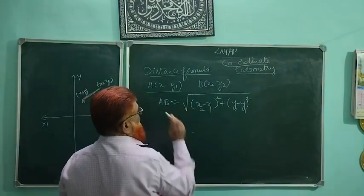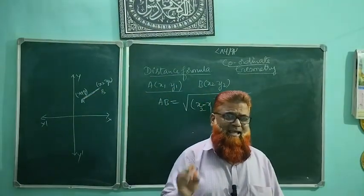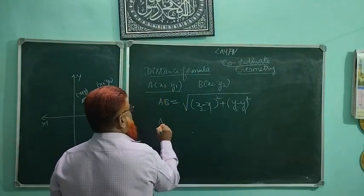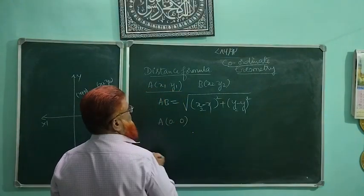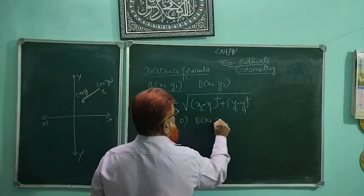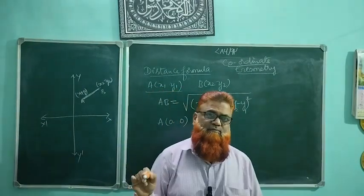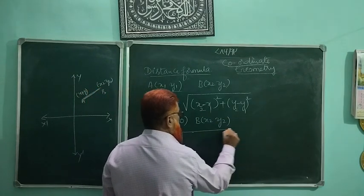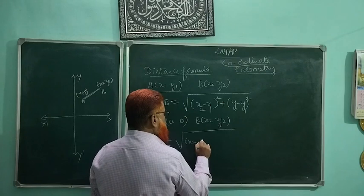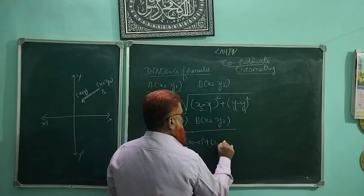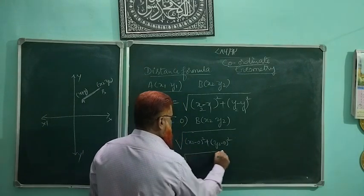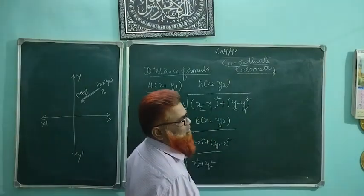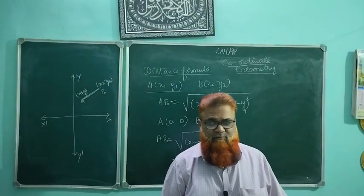This is the distance formula. Now suppose one point is at the origin where x is 0 and y is 0. Let A be (0, 0) and B have coordinates x2, y2. How do you write the distance formula? AB equals square root of (x2 minus 0) whole square plus (y2 minus 0) whole square, which simplifies to square root of x2 squared plus y2 squared.